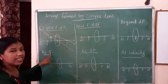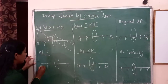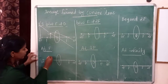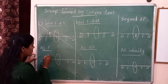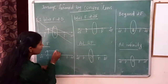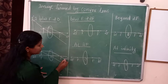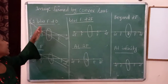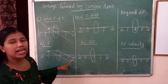Second case: object is at F. We draw the lens with F and 2F marked. Object AB is placed at F. Applying the first rule, a ray parallel to the principal axis passes through the focus. Applying the third rule, the ray through the optical center goes straight. The refracted rays are parallel and the image is formed at infinity.